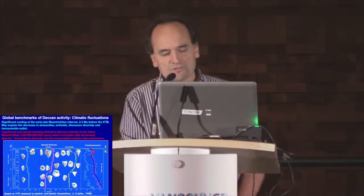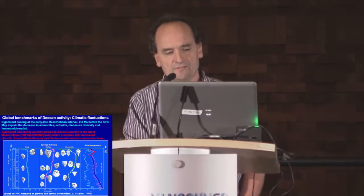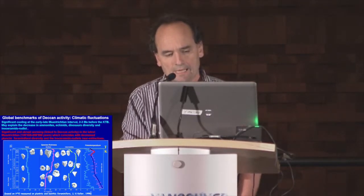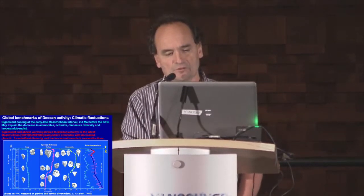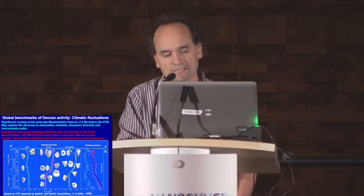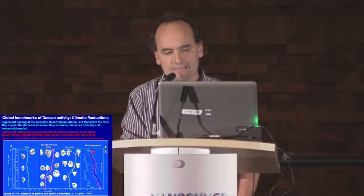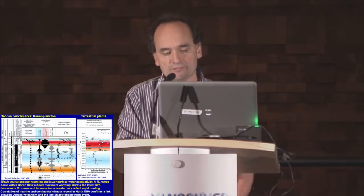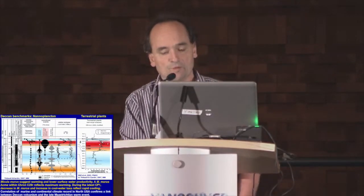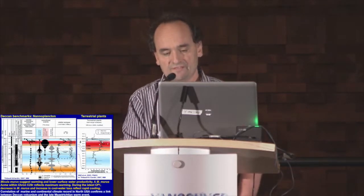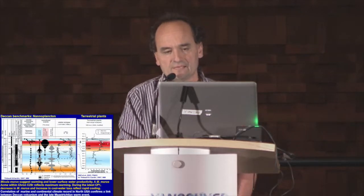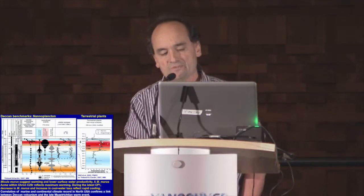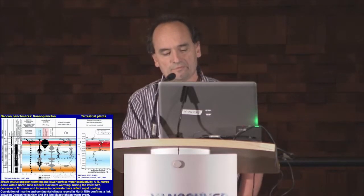Nanoplankton also records these events very nicely. We have organisms suggesting warming reflecting maximum warming in the latest Cretaceous zone, followed by increasing cool-water taxa reflecting rapid cooling again very close to the K-T boundary. We can correlate this marine record with the continental climate record from North America — a very nice paper by Wilf et al. using terrestrial plants and leaf margin analysis — showing a perfect link between Deccan volcanism, terrestrial environments, and marine environments, all recording this warm event.